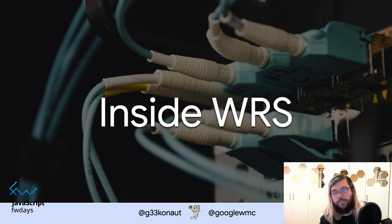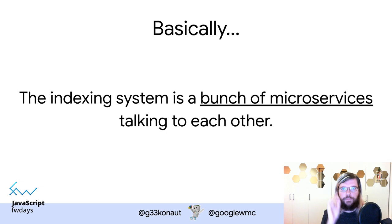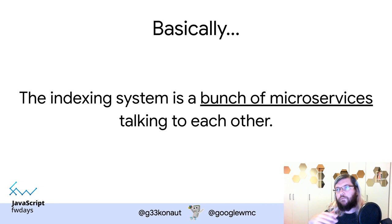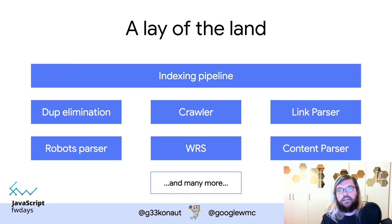To understand how Googlebot handles this, it helps to know how Googlebot is generally structured. Googlebot is not one program — it's a bunch of smaller programs that talk to each other and can take different paths for the same website. For instance, if fetching fails due to a network error, we retry; if rendering fails, we re-render. It is not a simple one-step operation where a URL goes in and rendered HTML comes out. It's more complicated than that.